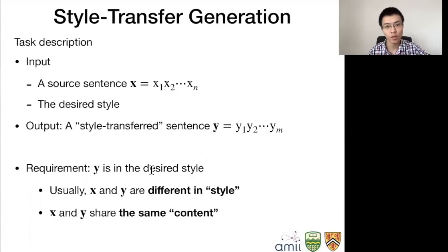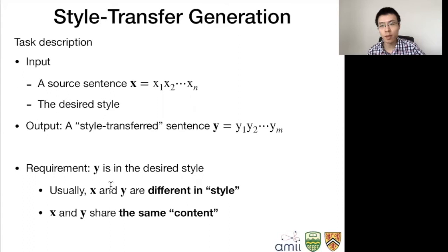Usually there are some implicit requirements. One is that X and Y are of different styles. Suppose we're doing sentiment style transfer — if the input is a positive sentiment, then the output should be negative, almost without exceptions. Otherwise, I can just copy the input and say I'm transferred, and it's the same as input, making the task degenerate.